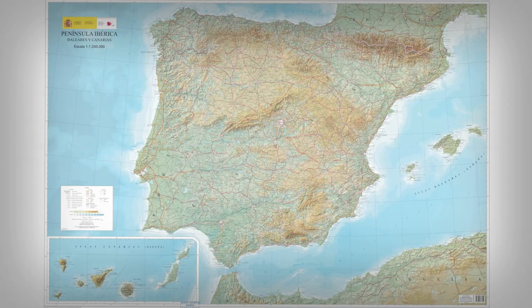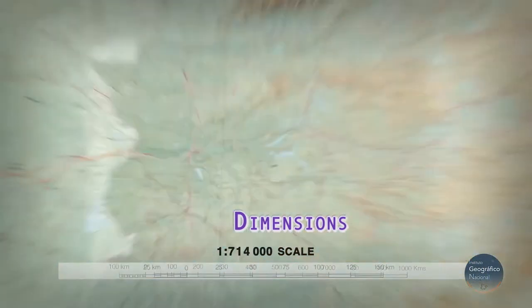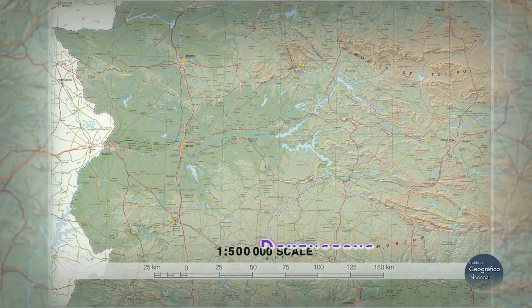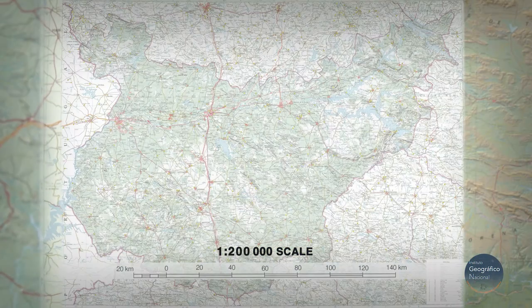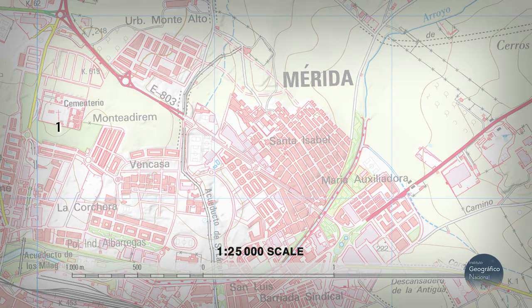A map is the communication method used by humans to describe the lay of the land. The dimensions of the content of a map are expressed by the scale, which relates the distances measured on the map with their real dimensions. On a 1:25,000 scale map, each millimetre shown on the map equals 25 metres on the ground.